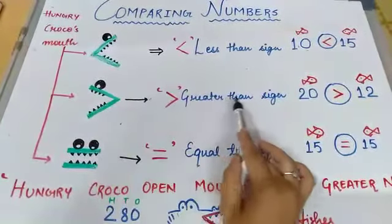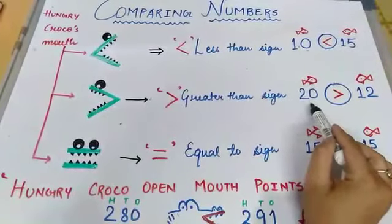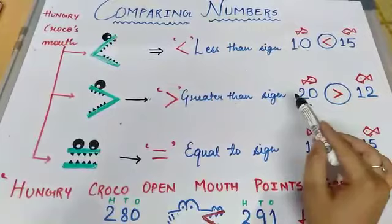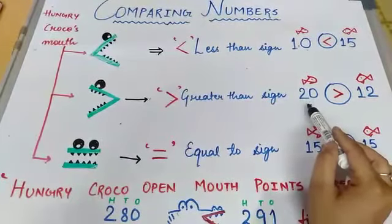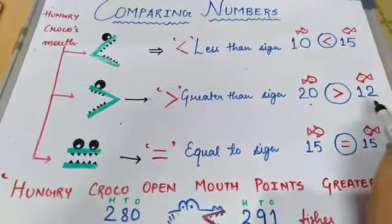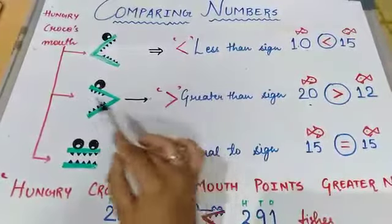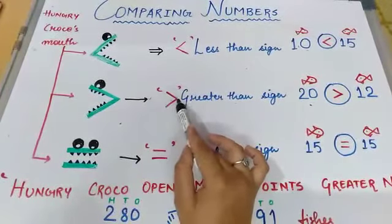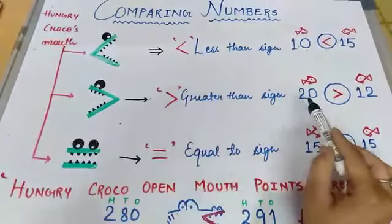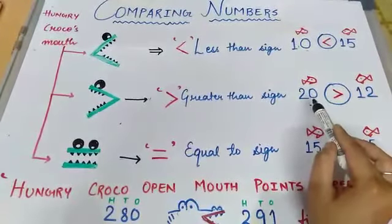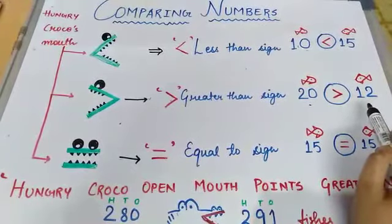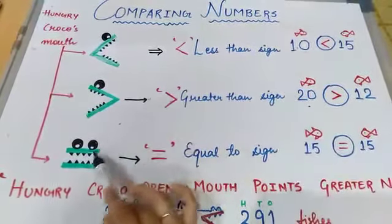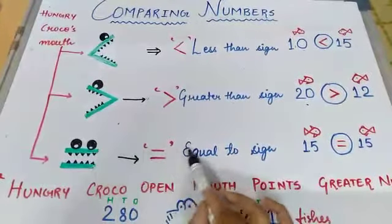Now this is greater than sign. Here are 20 fishes and here are 12 fishes. So kaunsi fishes khayega, 20 ya phir 12? Kis ke liye apna mouth woh open karega? Yeh kaisa sign, mouth open onto ya mouth close? Kis ke liye open karega? Greater number ke liye. To 20 zyada bada hai ya 12 zyada bada hai? 20, very good.